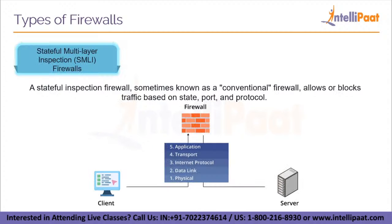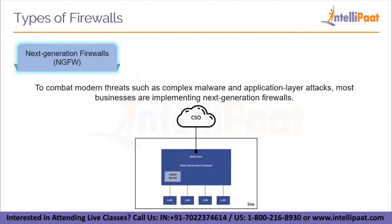Next we have SMLI firewalls, which stands for stateful multilayer inspection firewalls, sometimes known as conventional firewalls. They allow or block traffic based on state, port, and protocol. They keep track of all activities from the time a link is established until it is terminated. Filtering decisions are based on both administrator-defined criteria and context, which refers to utilizing data from prior connections and packets from the same connection.